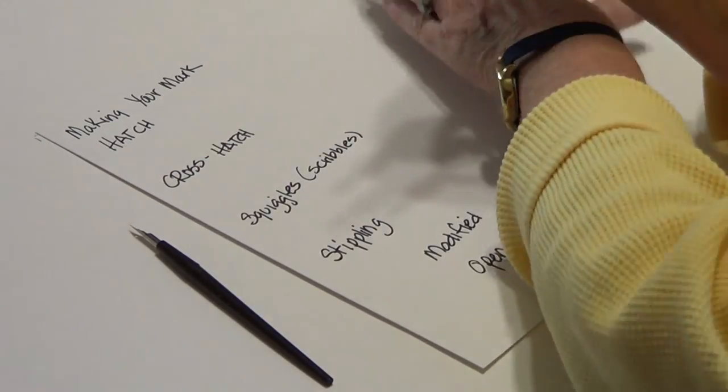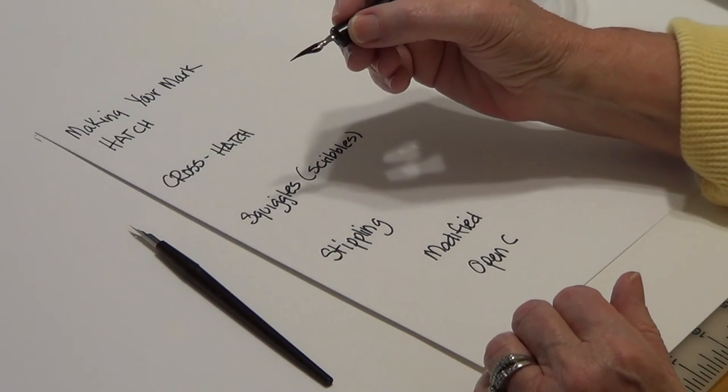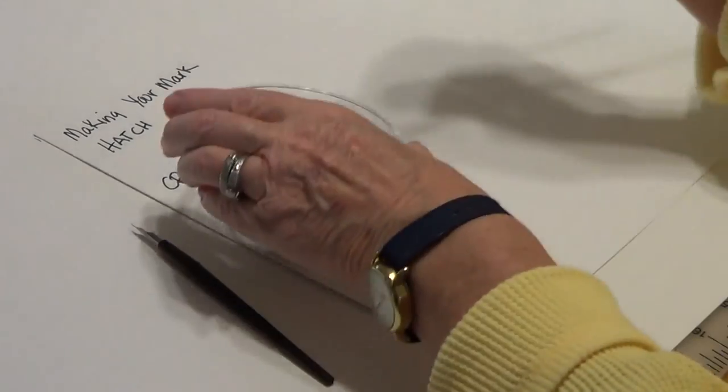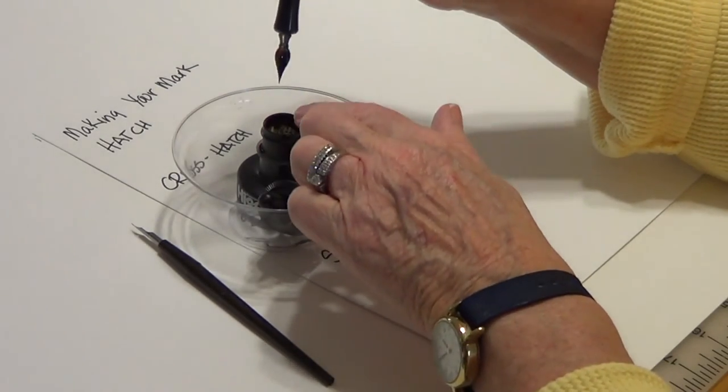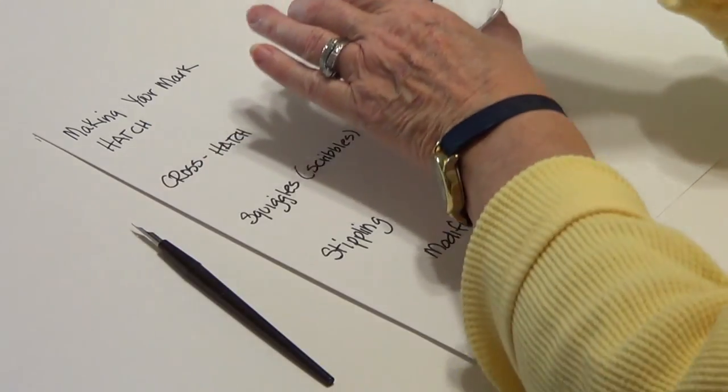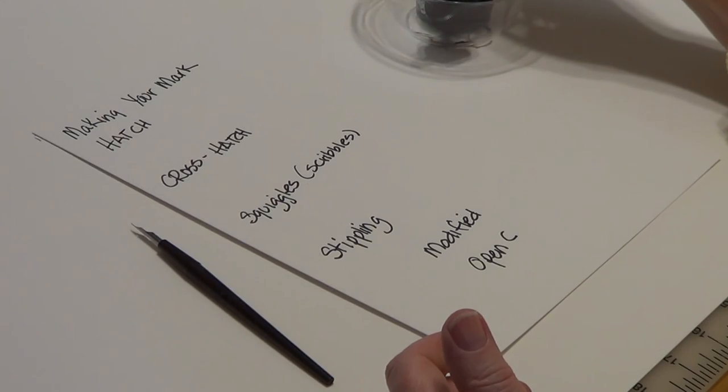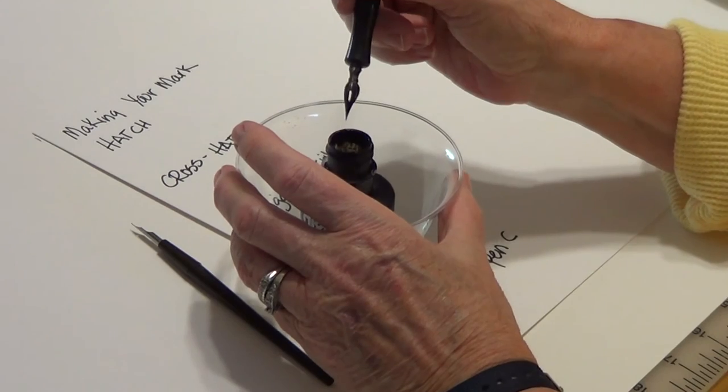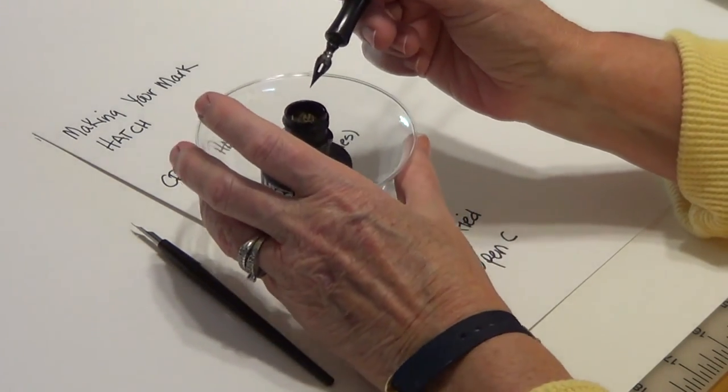Also, the way I'm holding this. I'm holding it up here. I never hold it down here because if I do then I'm going to get ink here. When you put your pen in here it could touch the sides and then you're going to get ink. So you want to keep your fingers up here. You can also dip in and then go like this on the nib. You want to have a pretty good amount of ink in there.